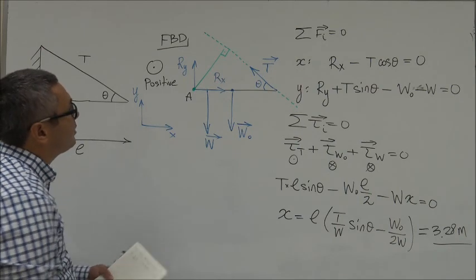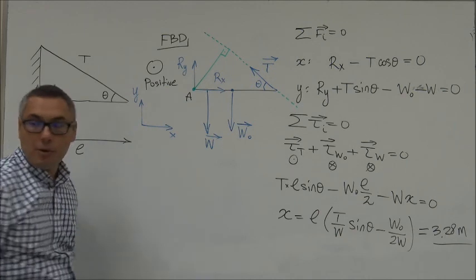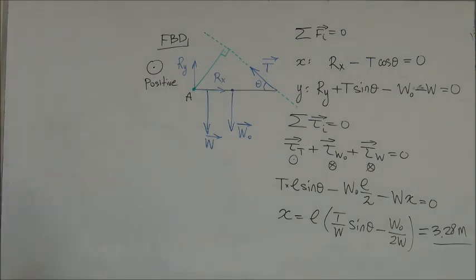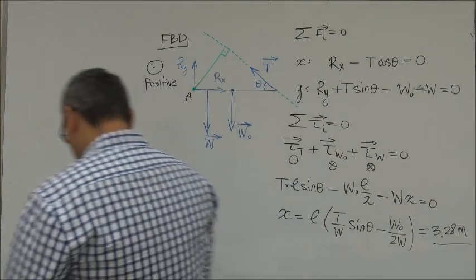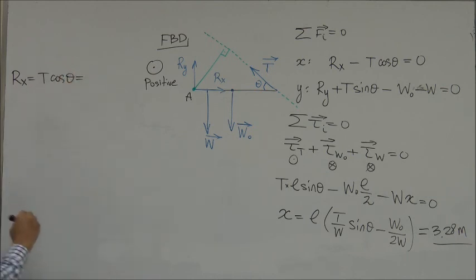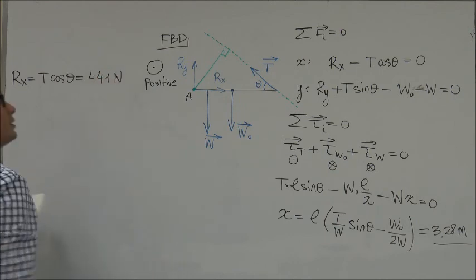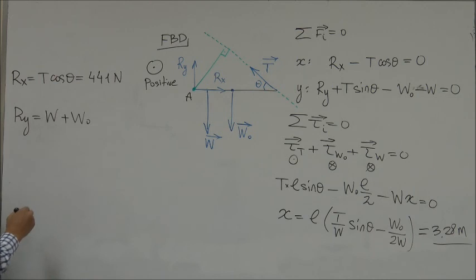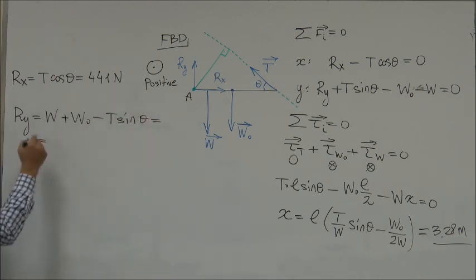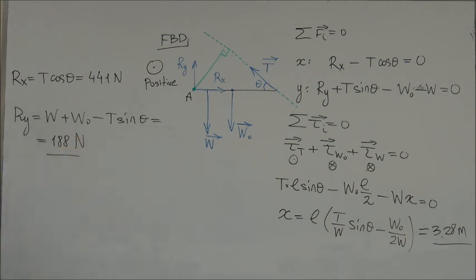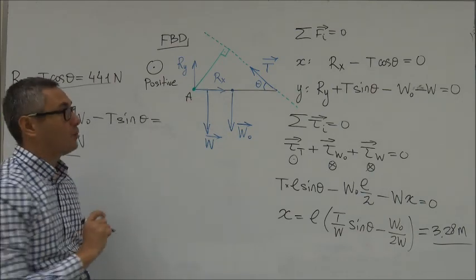In part B we need to calculate the R-X and R-Y components of the reaction force. These can be found from the first two equilibrium equations. R-X equals T cosine theta — plugging in the numbers gives 441 Newtons. R-Y equals W plus W-zero minus T sine theta — plugging in the numbers gives 188 Newtons for the Y component. These are the R-X and R-Y components when the block is at its maximum allowed distance from the wall.